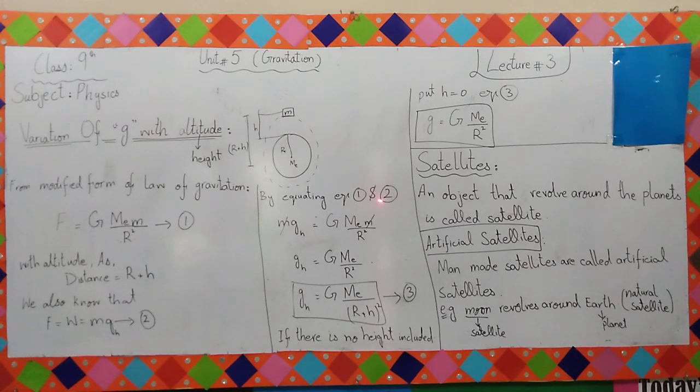By equating equation number 1 and 2, compare equation 1 and 2 because left hand side is the same, so right hand side is equal. Mgh is equal to G, M, E, M over r square. Both small m cancel out. What happens? G is equal to G, M, E over r square.